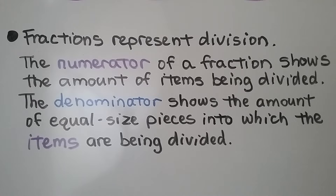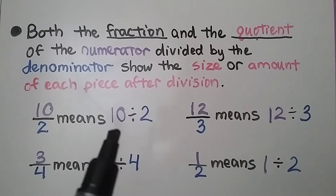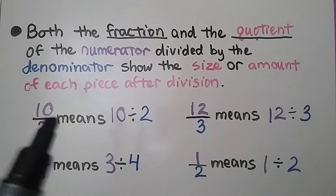Fractions represent division. The numerator of a fraction shows the amount of items being divided. The denominator shows the amount of equal-sized pieces into which the items are being divided. Both the fraction and the quotient of the numerator divided by the denominator show the size or amount of each piece after division. We can think of this fraction bar as a division sign symbol.